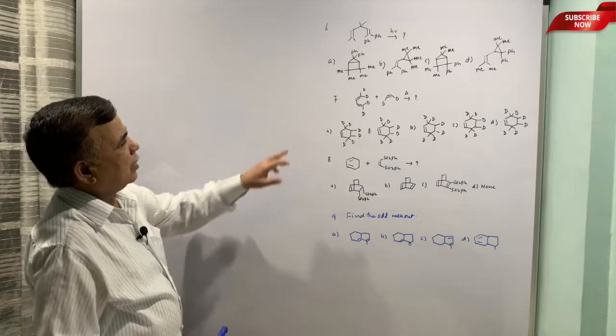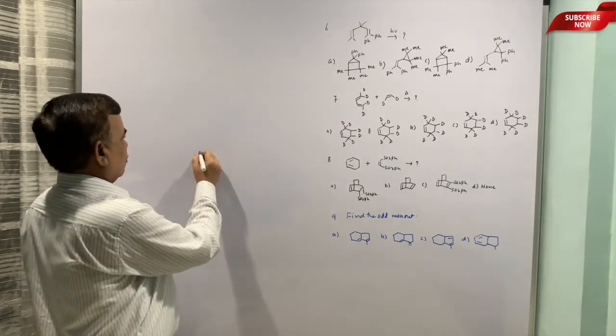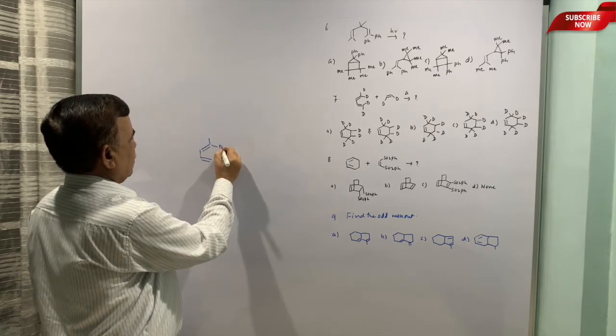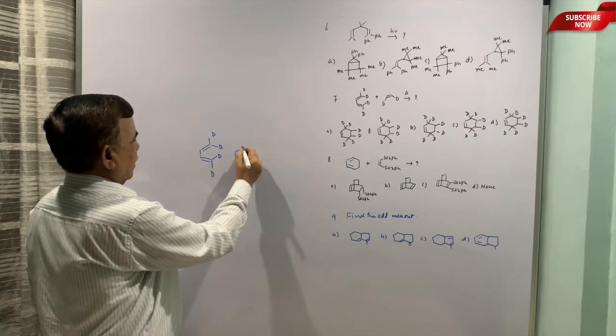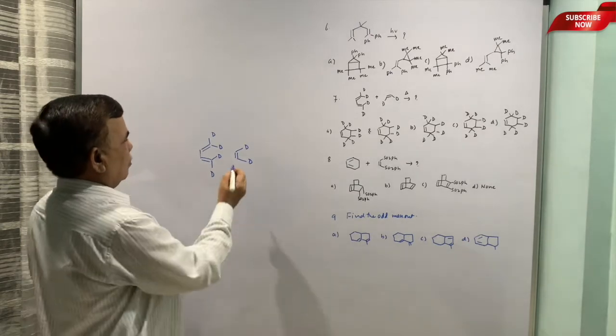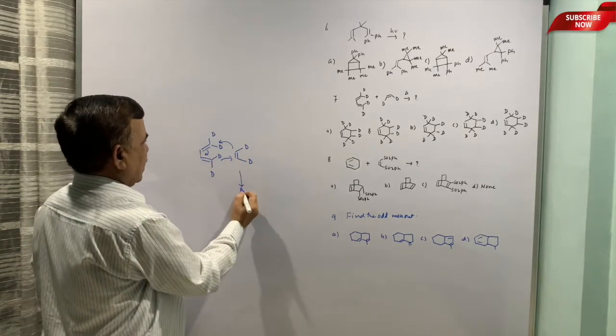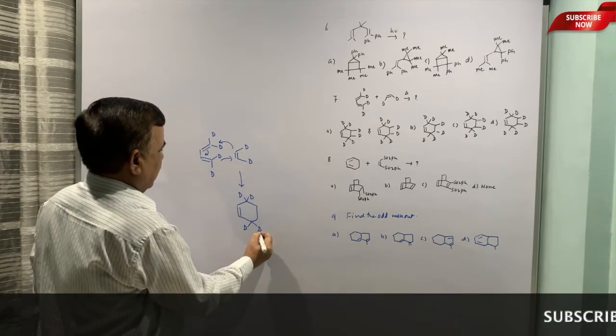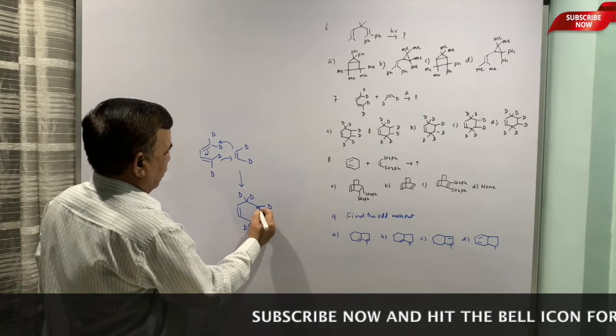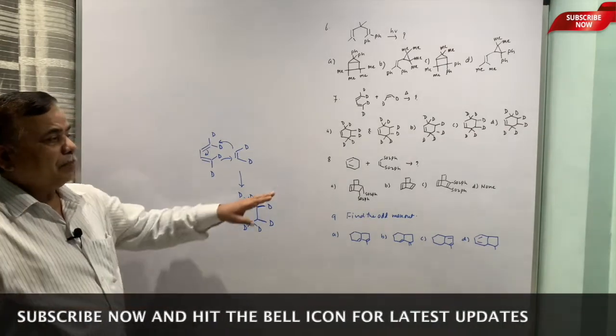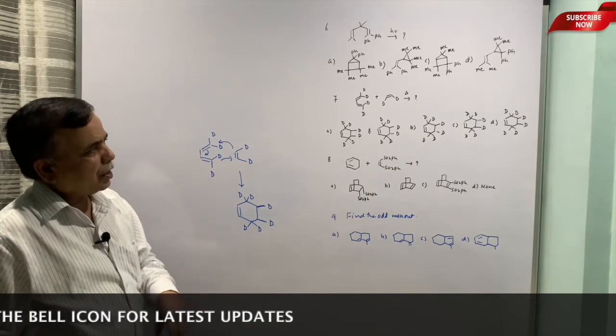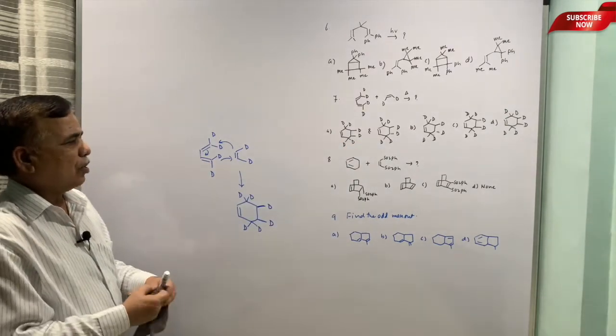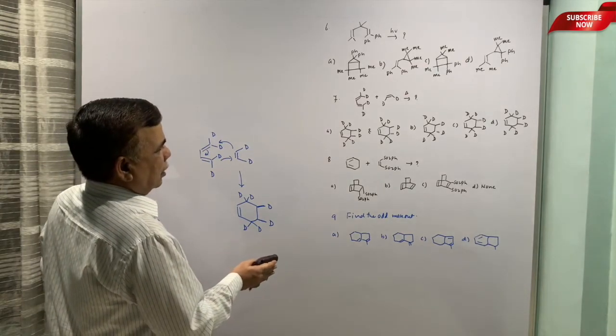Okay, now next one is once again Diels-Alder reaction. So here I will just draw the diene which is given over there. So this is the substituted butadiene or deuterated butadiene one can say, and this is deuterated ethylene. So this is your classical 4+2 cycloaddition reaction and the cycloaddition reaction should lead to the formation of ring. That is what is happening. The diene and dienophile are reacting and in the product the stereochemistry of deuterium from the dienophile side has to be written.